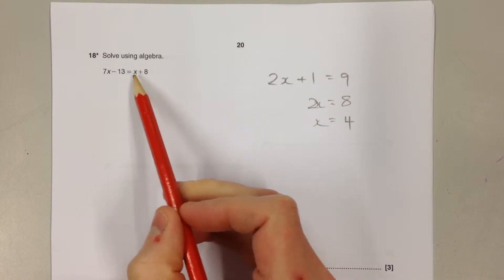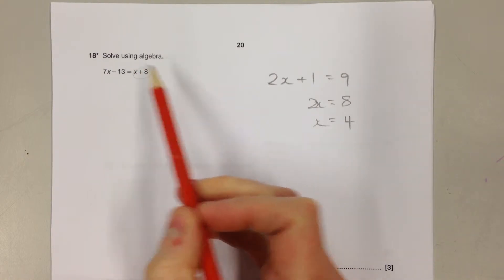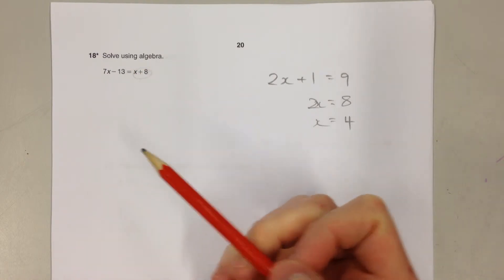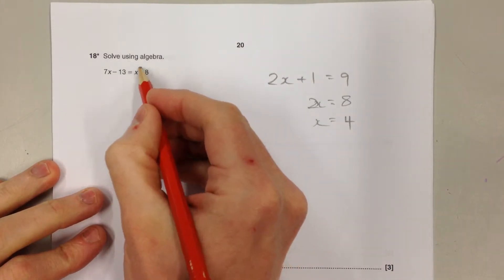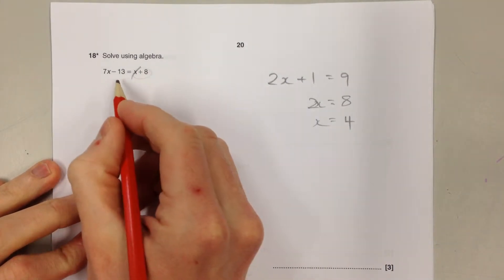We can't do that in this case because we don't have a number to work backwards from. We've got letters on both sides. So what we've got to do is get rid of the letter that's causing the problems.